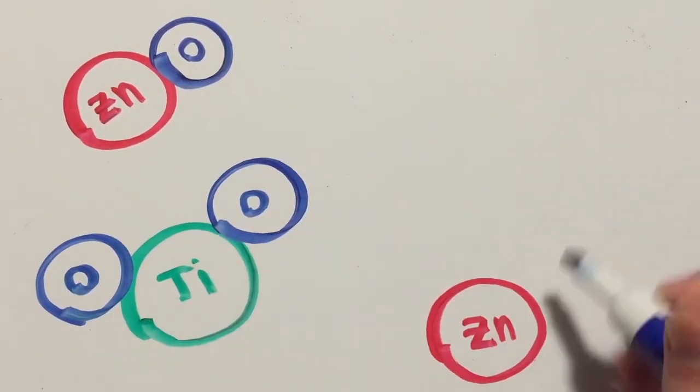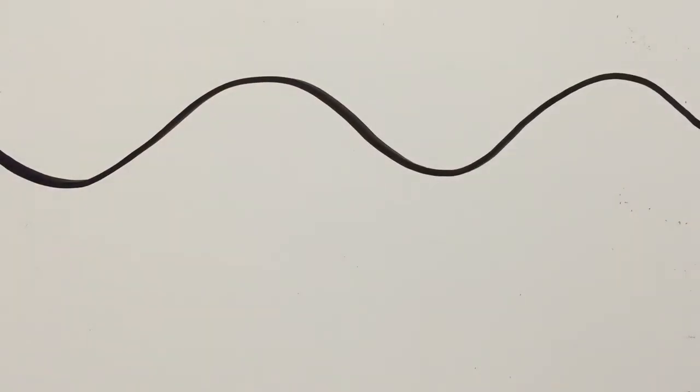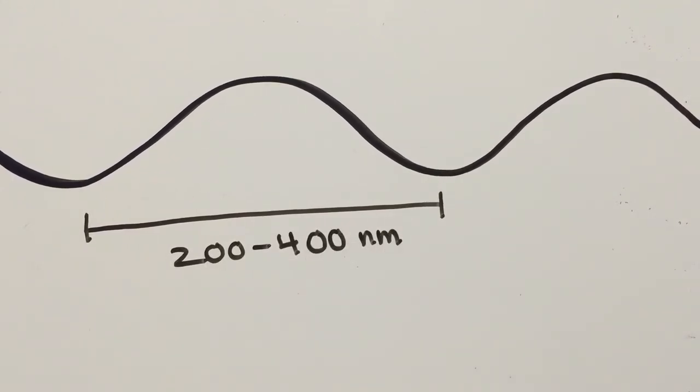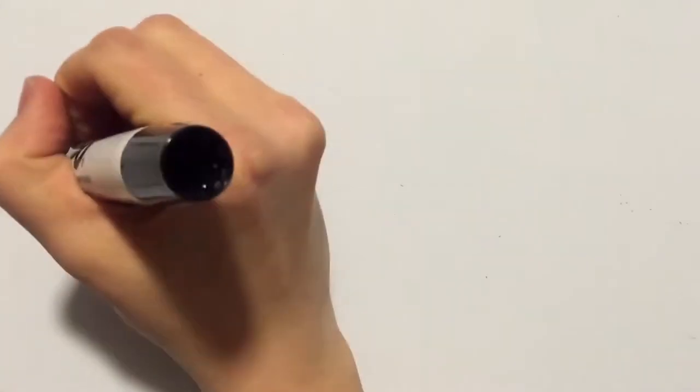These materials are used because of their ability to protect against harmful ultraviolet radiation at short wavelengths from 200 to 400 nanometers. UV rays cause sunburn and can even cause skin cancer.